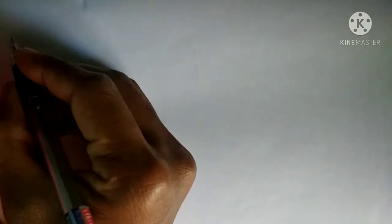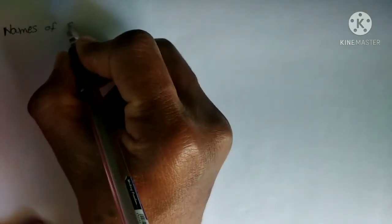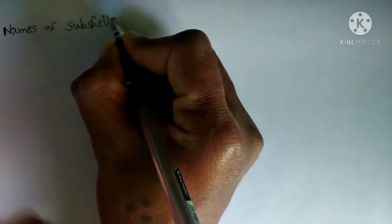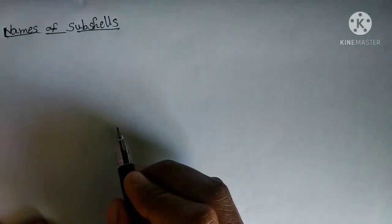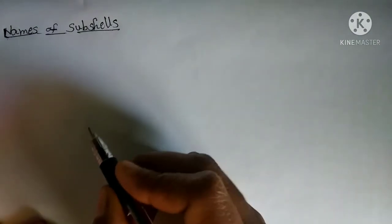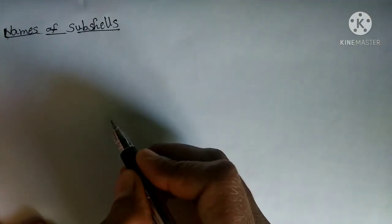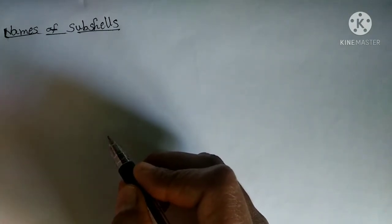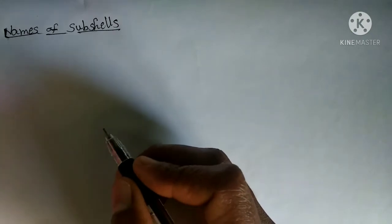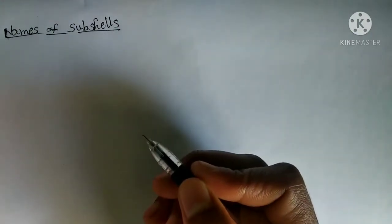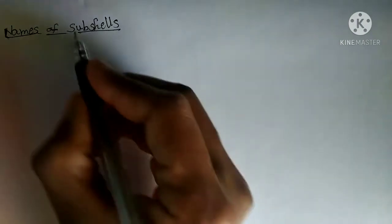Hi, this is your Jhansi ma'am. In the previous video we discussed shells and subshells. In today's video we are going to discuss the names of subshells. We have discussed what is meant by shell, what is meant by subshell, how many subshells are in one shell, how many orbitals are there, how many electrons are there, and the formulas to calculate those.